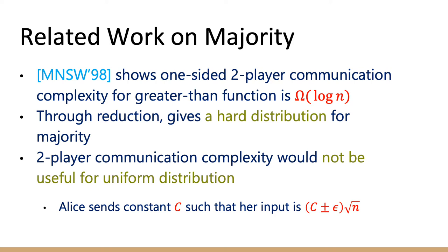Two-player communication complexity tools would not be useful for proving lower bounds against the uniform distribution, because there exists a constant-communication protocol for solving majority over the uniform distribution. Specifically, Alice holds n/2 input bits and Bob holds n/2 bits, and Bob needs to output the majority. Alice can simply send a constant c such that her input sum is within ±ε·√n of c·√n, which holds with high probability under the uniform distribution. This gives a constant-communication protocol for majority on the uniform distribution, so we cannot prove Ω(log n) space bounds via two-player communication complexity.